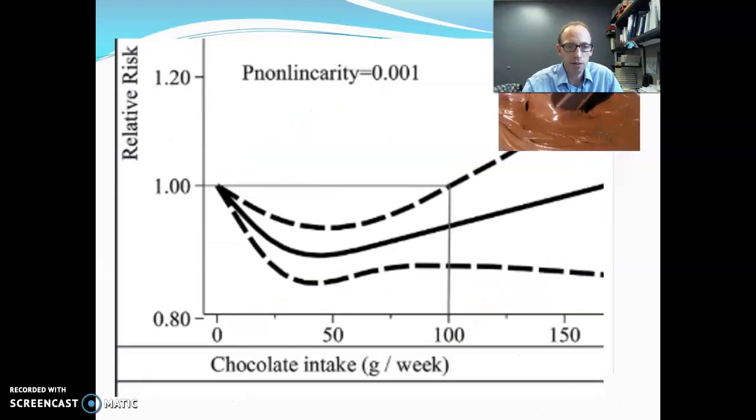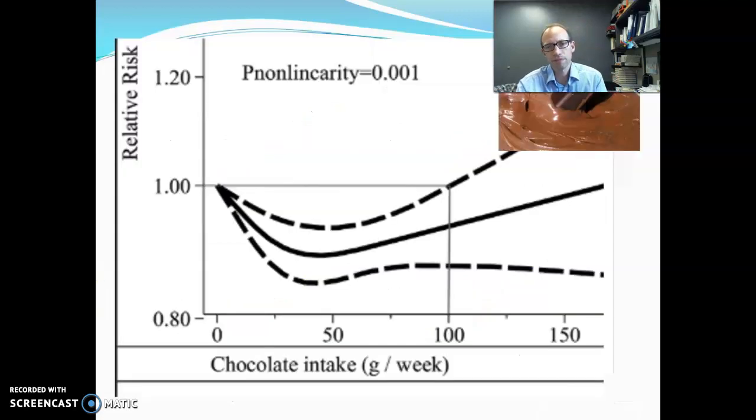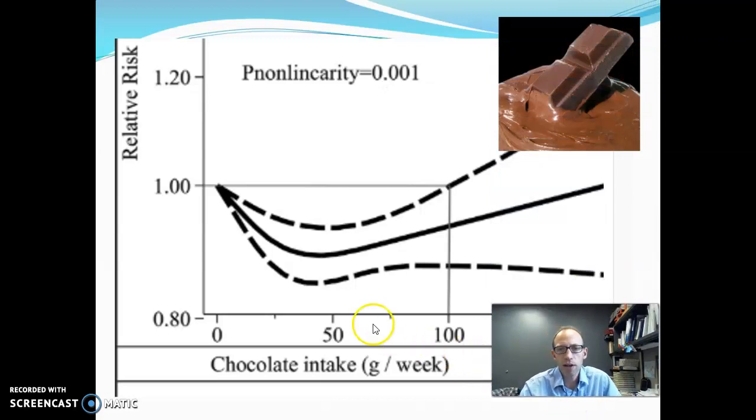So what does it look like to have a nonlinear relationship? Well, here's a case of chocolate intake. And there's quite a few variables like this in the medical field, which is called a J-curve. And the idea is as you get a little bit of something, in this case chocolate, how many grams of chocolate you're eating per week,